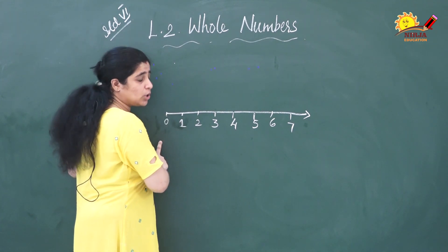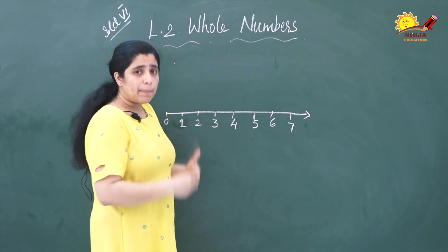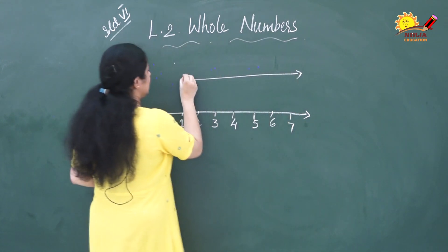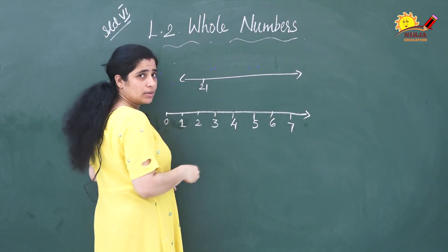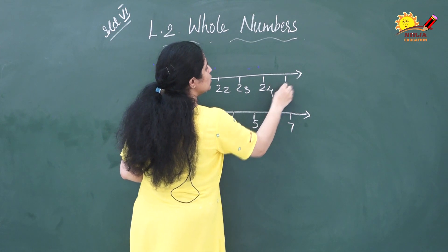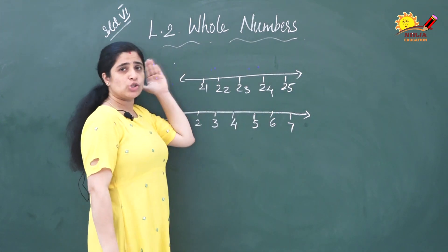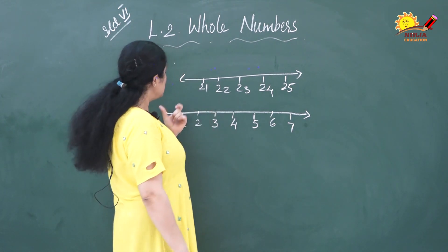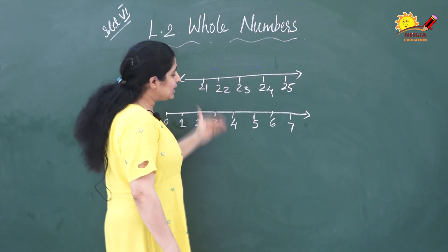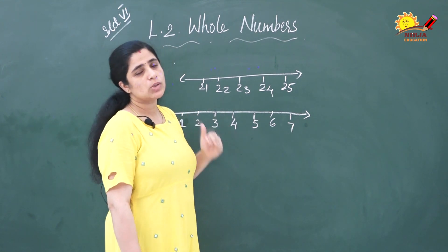You start from 0, then 1, 2, 3, 4, 5, 6, 7, and so on. Suppose you are starting from 21 on a number line: 21, 22, 23, 24, 25, and so on. Here you can keep the arrow mark on the left side because 21 is not the smallest whole number — 0 is. So you can keep the arrow mark. This is how you represent whole numbers on a number line.